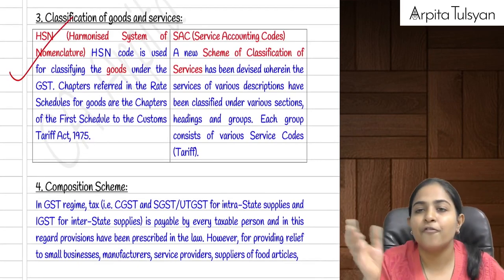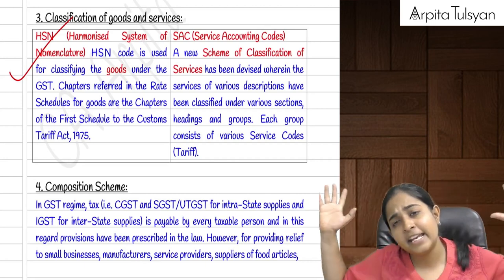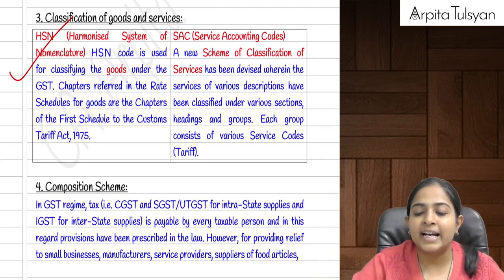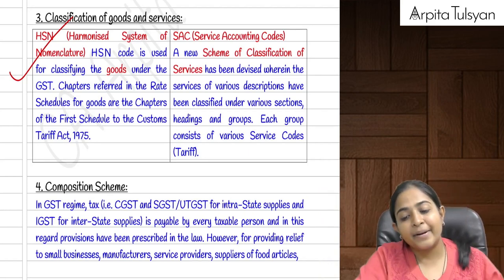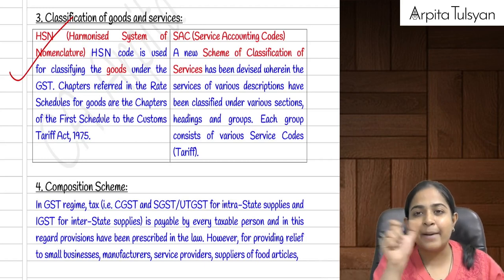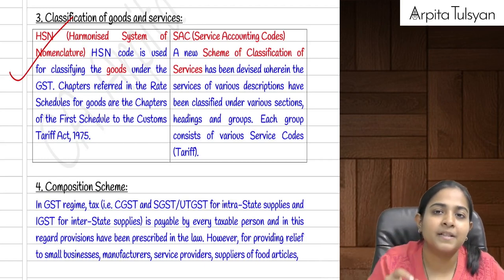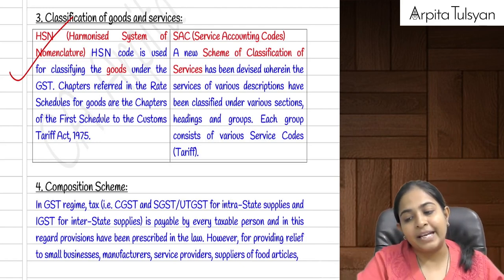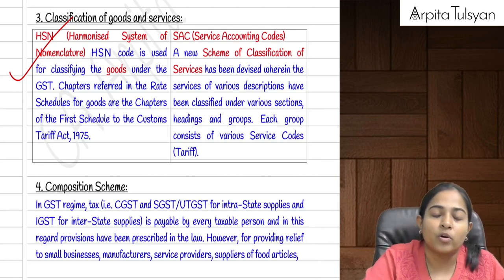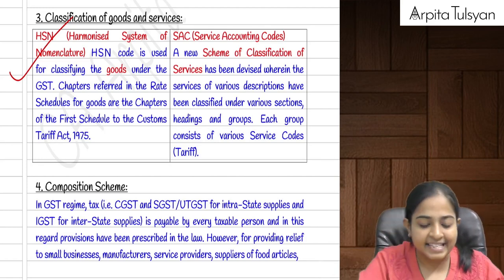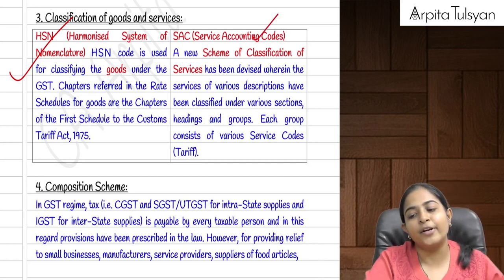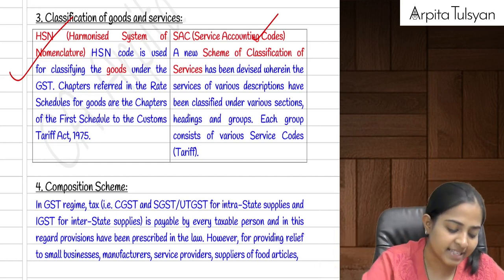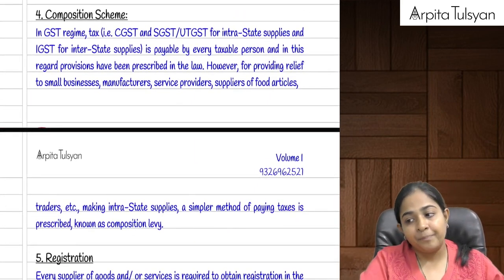For the purpose of deciding rates of GST, a classification is done. For goods they use HSN code — Harmonized System of Nomenclature — for naming and numbering goods, and based on that the rate of GST is decided. For services, they use SAC — Service Accounting Code — to divide services and decide the applicable GST rates.